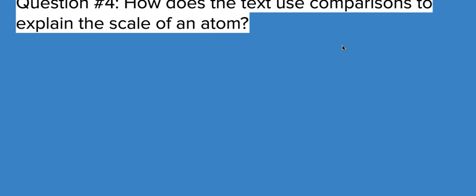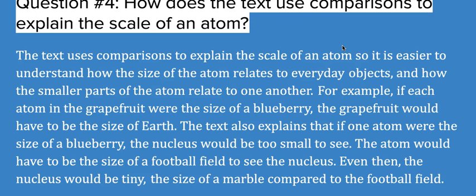And our last question, question four: How does the text use comparisons to explain the scale of an atom? This is where they're asking about that football field and the grapefruit and the blueberry, all those things used to explain just how small an atom really is. The text uses comparisons to explain the scale of an atom so it is easier to understand how the size of the atom relates to everyday objects and how the smaller parts of the atom relate to one another. For example, if each atom in the grapefruit were the size of a blueberry, the grapefruit would have to be the size of Earth. The text also explains that if one atom were the size of a blueberry, the nucleus, the inside part where the protons and neutrons are, would be too small to see. The atom would have to be the size of a football field to see the nucleus. Even then, the nucleus would be tiny, the size of a marble compared to the football field.